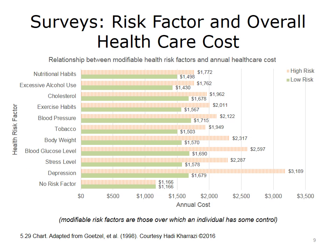This bar chart shows the potential share of risk associated with a number of behavioral risk factors. For example, a high risk for depression will increase the annual health care cost by almost $3,250 annually. Note that these are modifiable health risk factors that can be addressed accordingly to achieve a lower health care cost in a given population.